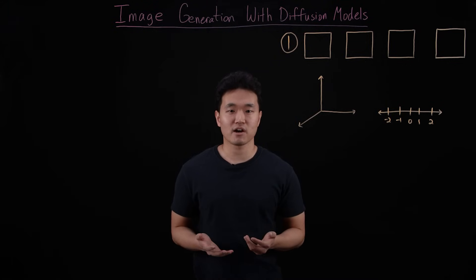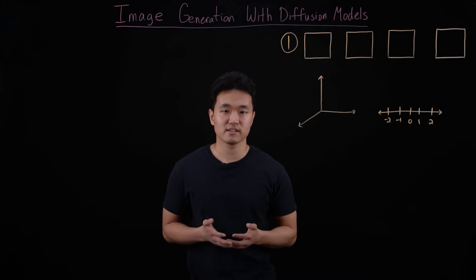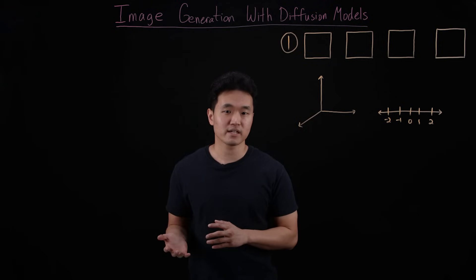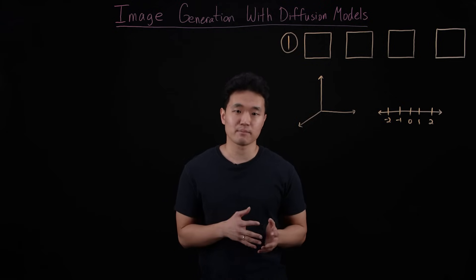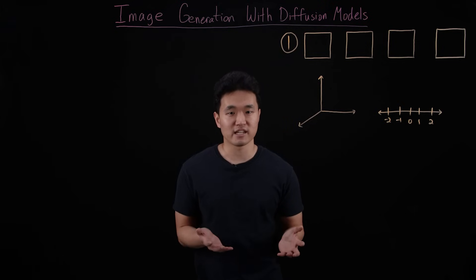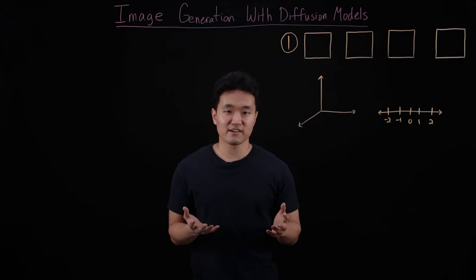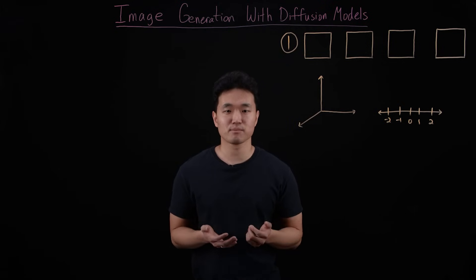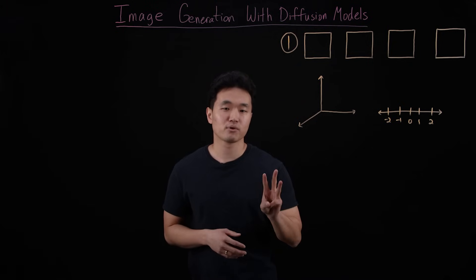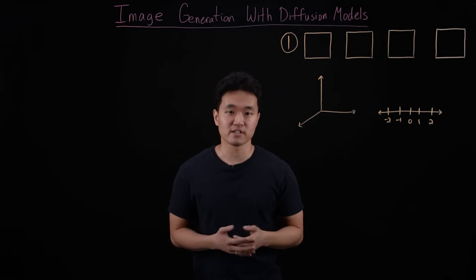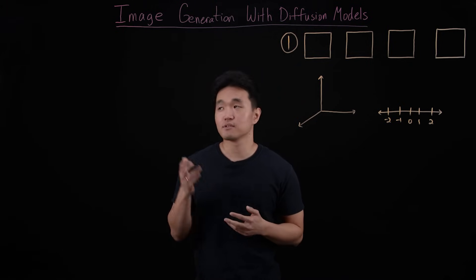At a high level, diffusion models are a type of deep neural network that learn to add noise to a picture and then learn how to reverse that process to reconstruct a clear image. I know this might sound abstract, so to unpack this more I'm going to walk through three important concepts that each build off each other, starting first with forward diffusion.